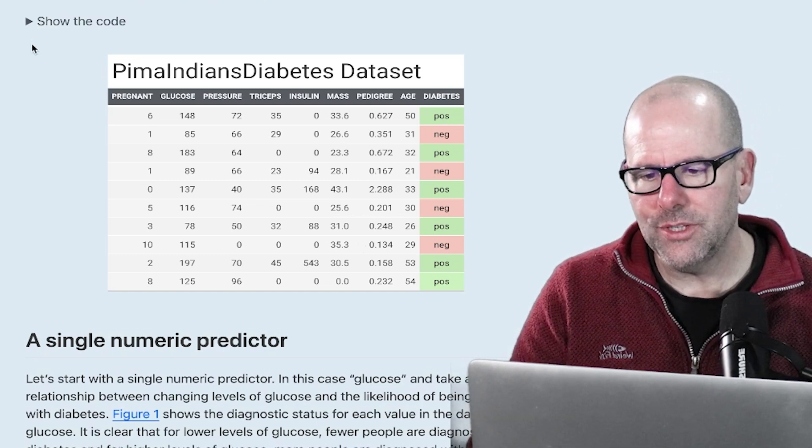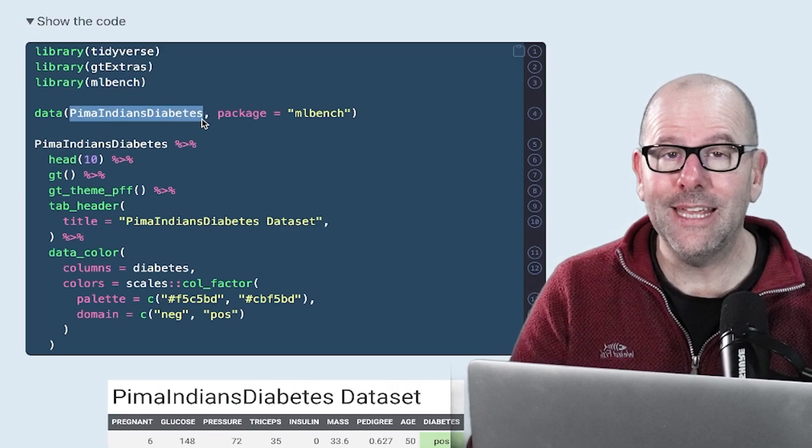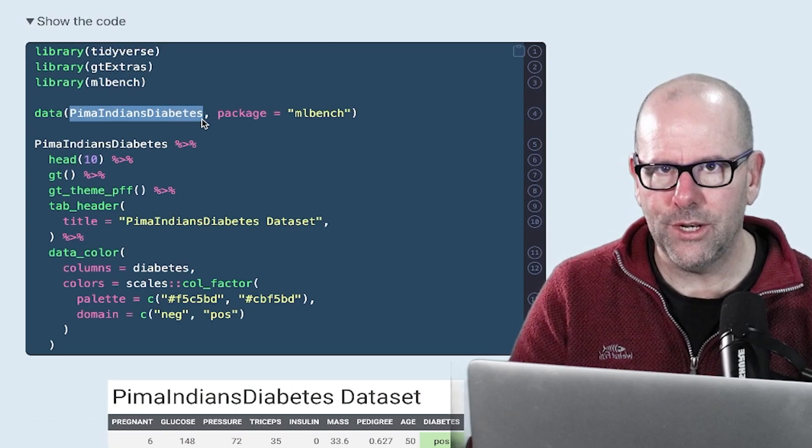This is the dataset that we're using. You have access to this data, by the way. If you're working in R, install the MLBench package. This is the dataset that you then have access to. You can replicate everything that I'm doing at home. It's the best way to learn.